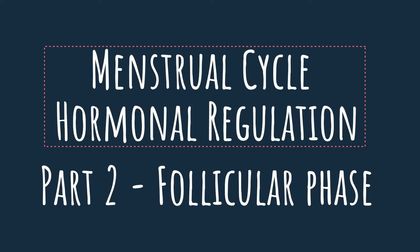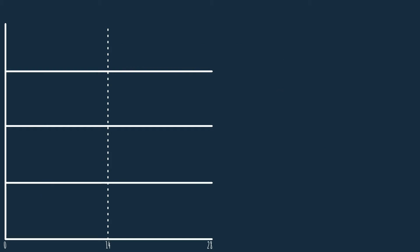In the previous video we did a quick overview of the menstrual cycle and became familiar with the cycle's main events and the hormones that promote them. In this video we will discuss the first half of the menstrual cycle, called the follicular phase, which lasts from day 0 to day 14, basically from the beginning of the cycle until we reach ovulation.